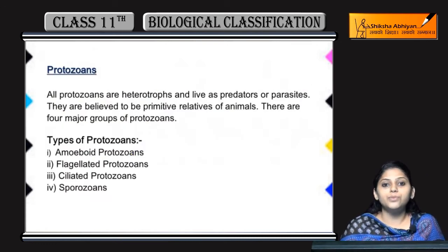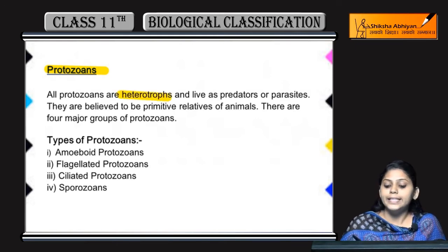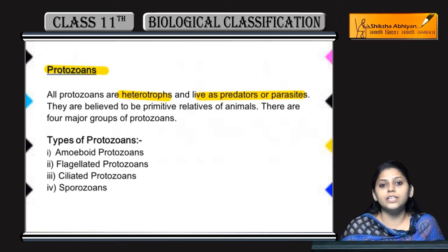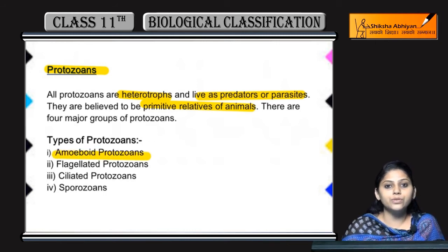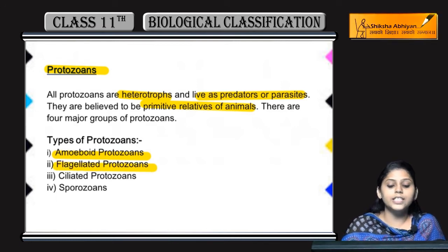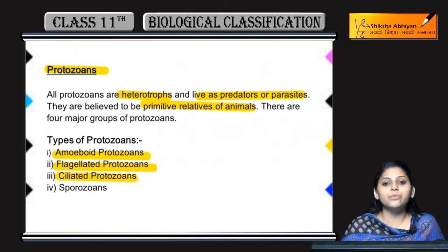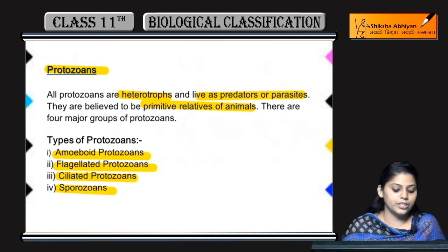Now coming to the protozoan part. Protozoans kya hote hai? Unka mode of nutrition is heterotrophic — they live as predators or parasites. Parasites kya — kissi doosre organisms pe reh kar, unse nutrition lete hai, aur unhein harm kar sakte hai. They are primitive relatives of animals. Four types ke hote hai: amoeboid protozoans, flagellated protozoans, ciliated protozoans, and sporozoans — jo parasitic nature ke hote hai.